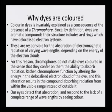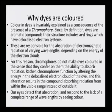By definition, dyes are aromatic compounds; their structure includes aryl rings which have a delocalized electron system. These are responsible for the absorption of electromagnetic radiation of varying wavelengths depending on the energy of the electron clouds. Chromophores do not make dyes colored in the sense that they confer on them the ability to absorb radiation. Rather, chromophores function by altering the energy in the delocalized electron cloud of the dye, and this alteration results in the compound absorbing radiation from within the visible region instead of outside it.